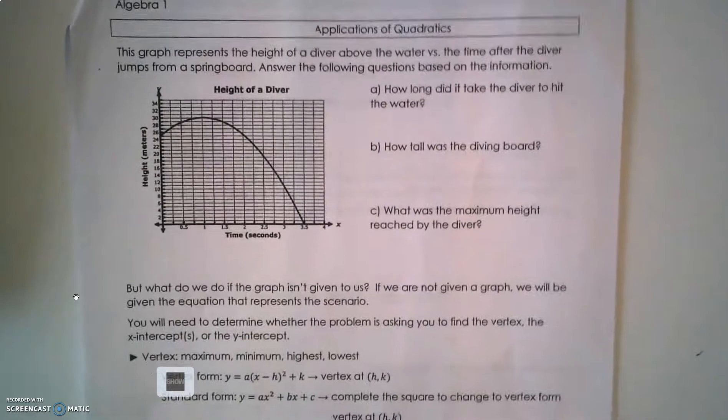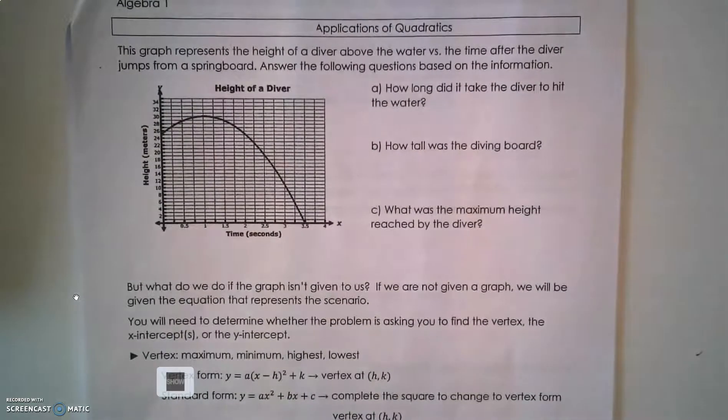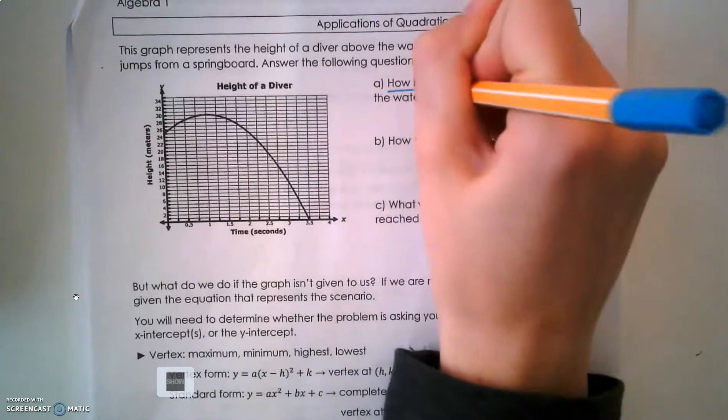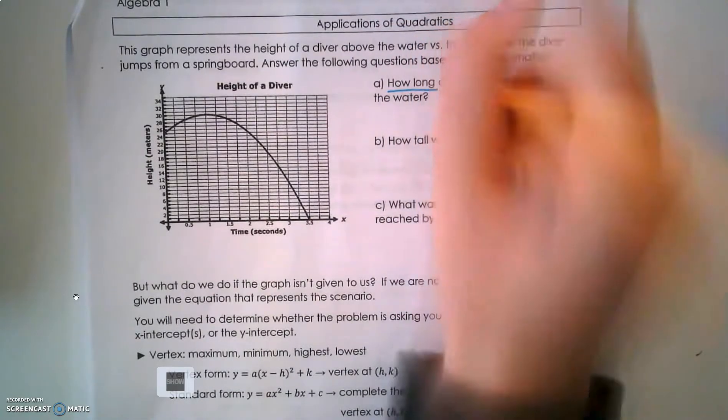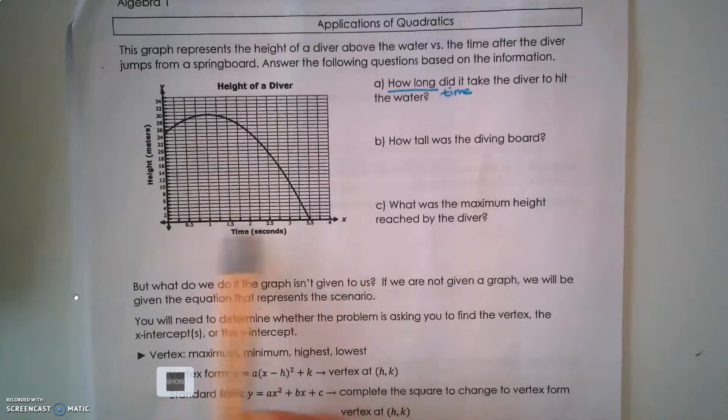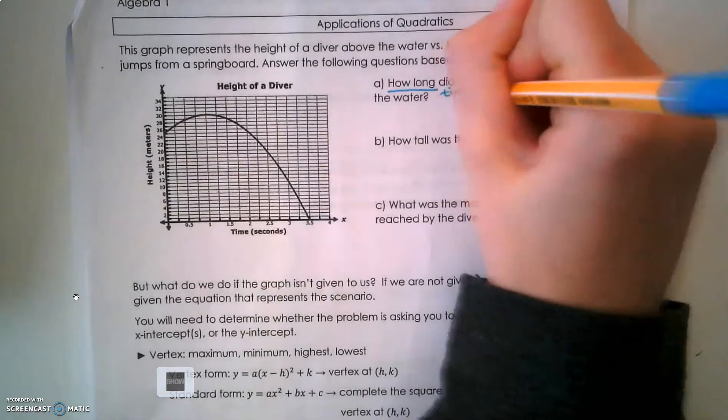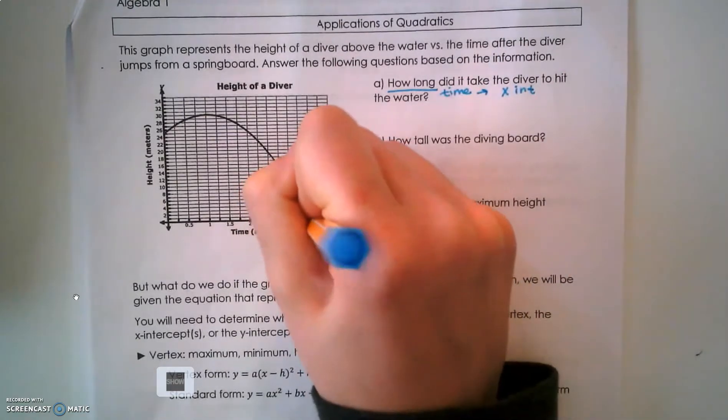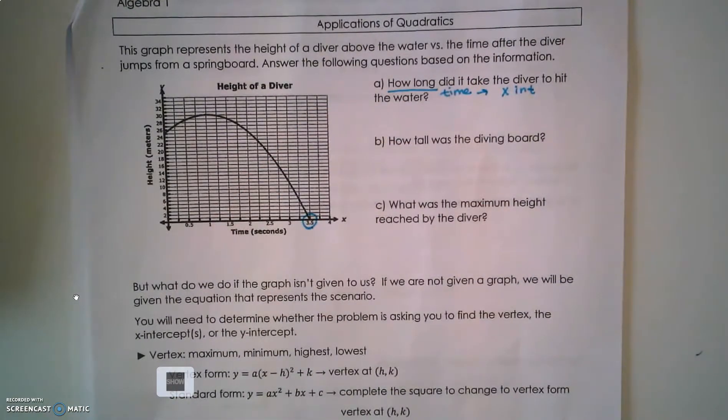Let's break down this graph. This graph represents the height of a diver above the water versus the time after the diver jumps off the springboard. How long did it take the diver to hit the water? That's a time-related question, so if you look at your graph, time is on the x-axis, so it's asking for an x-intercept. Right here is where this diver lands.